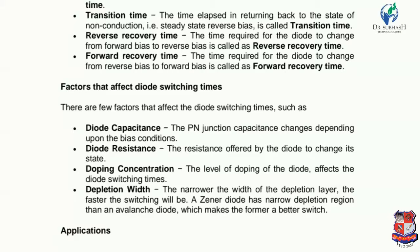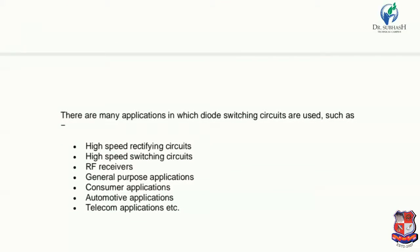Negative ions accumulate and form a depletion region — an extra layer known as the depletion region. When the depletion region is narrow, it affects the diode as a better switch. The depletion width is an important factor affecting switching performance.